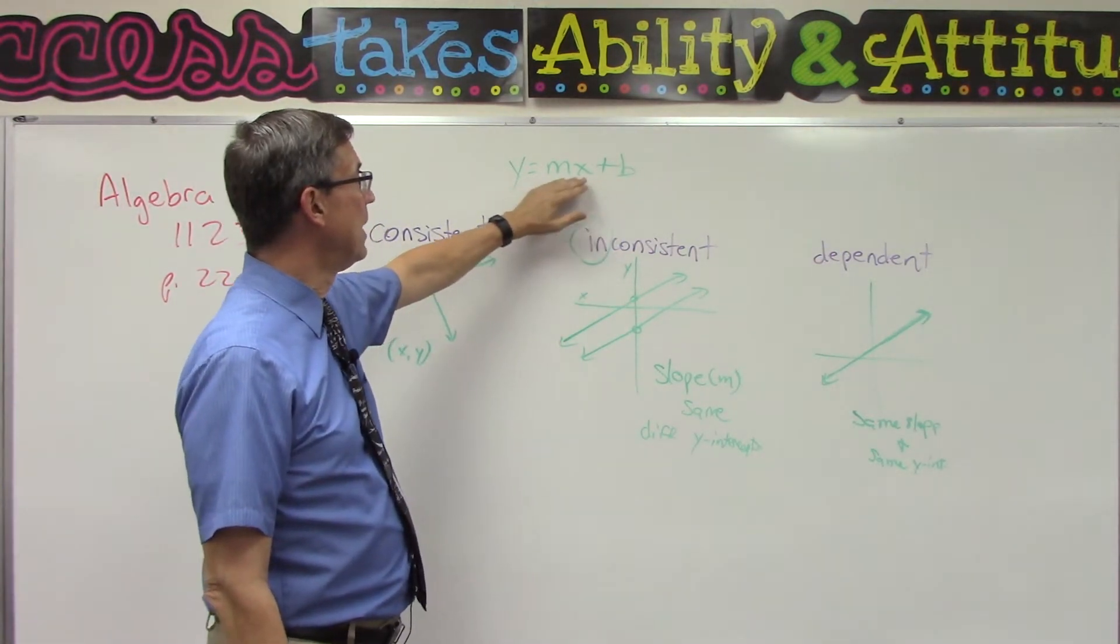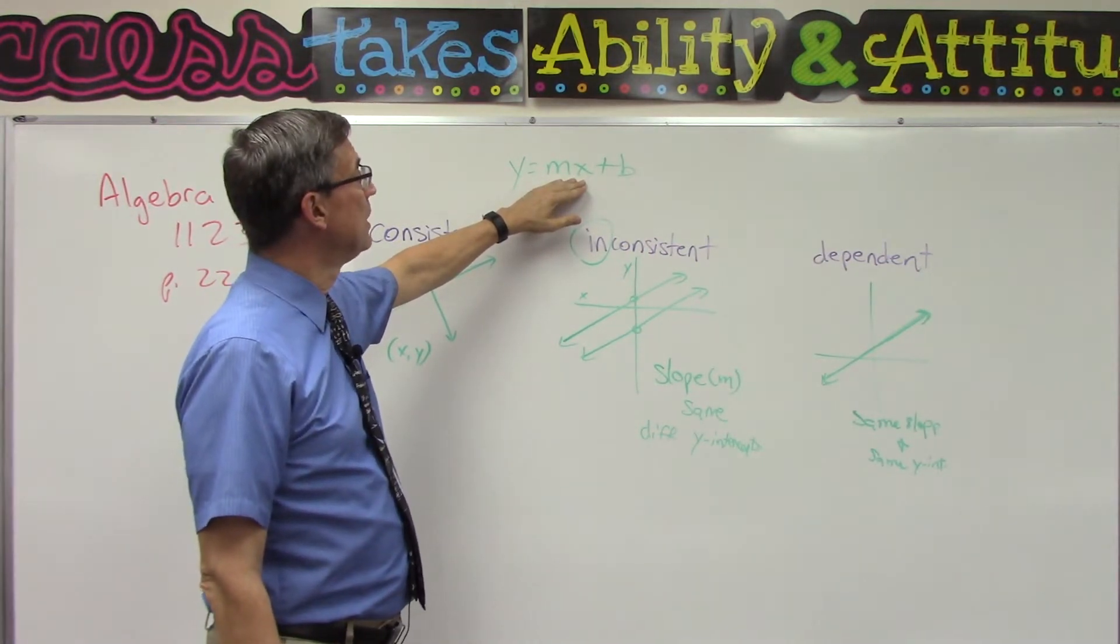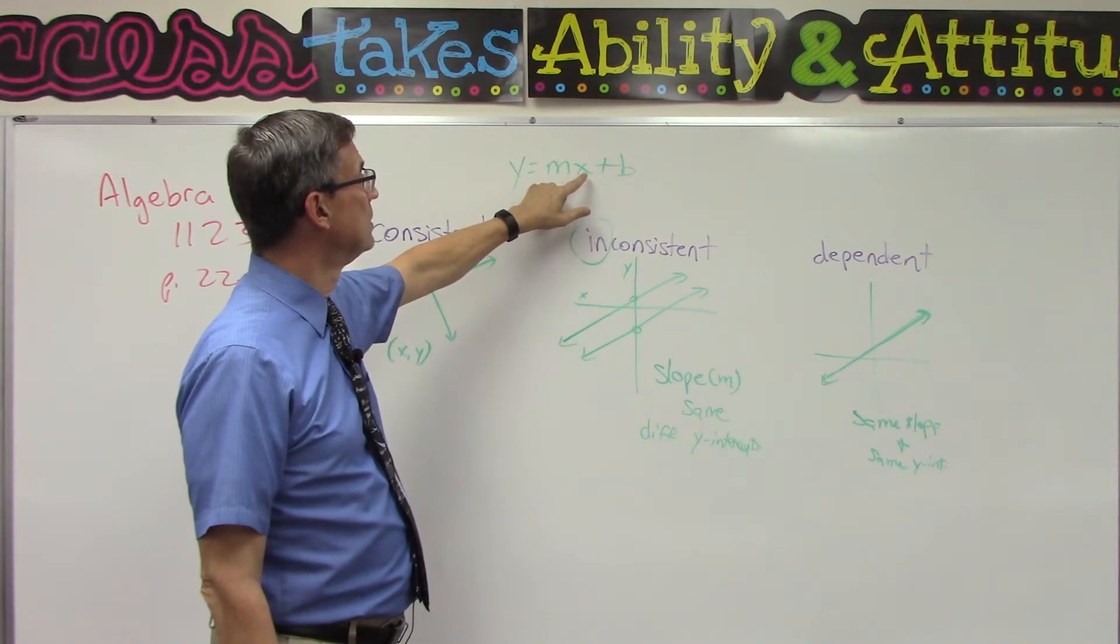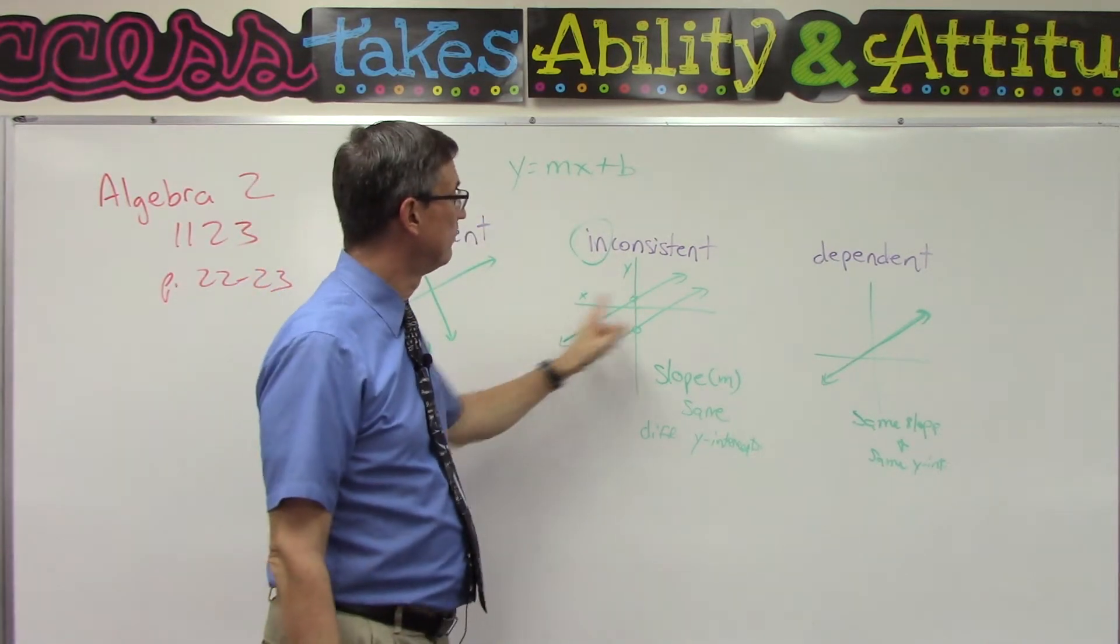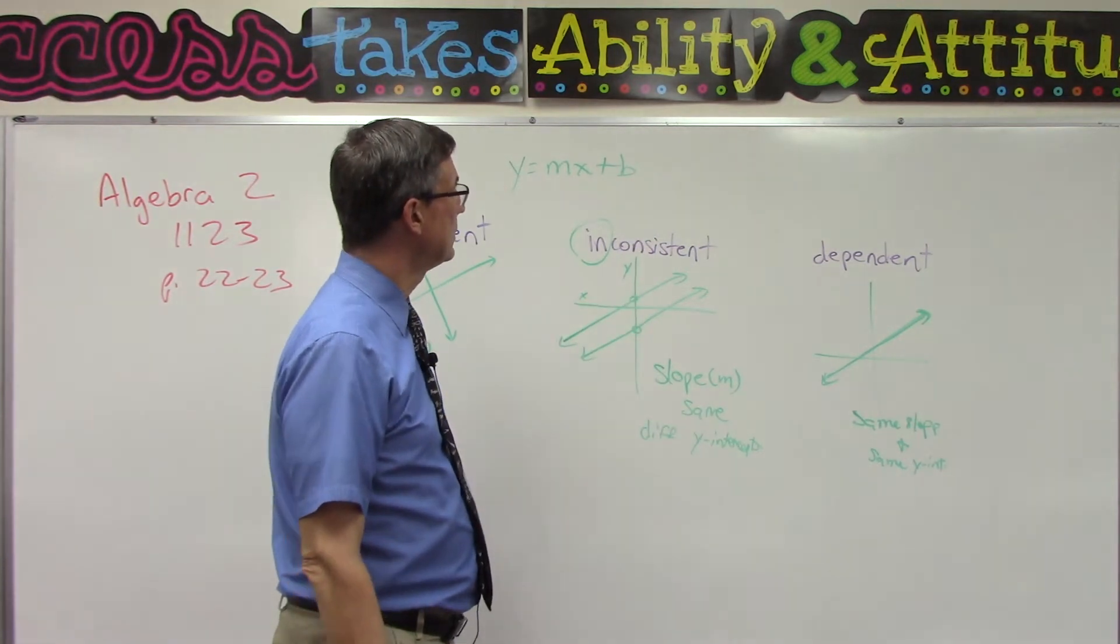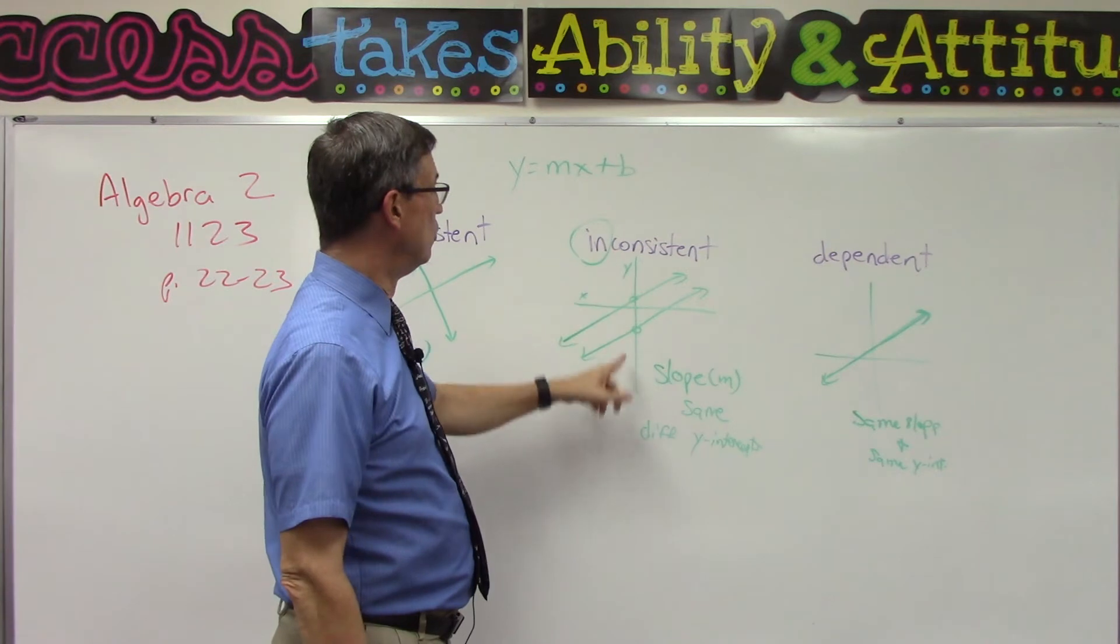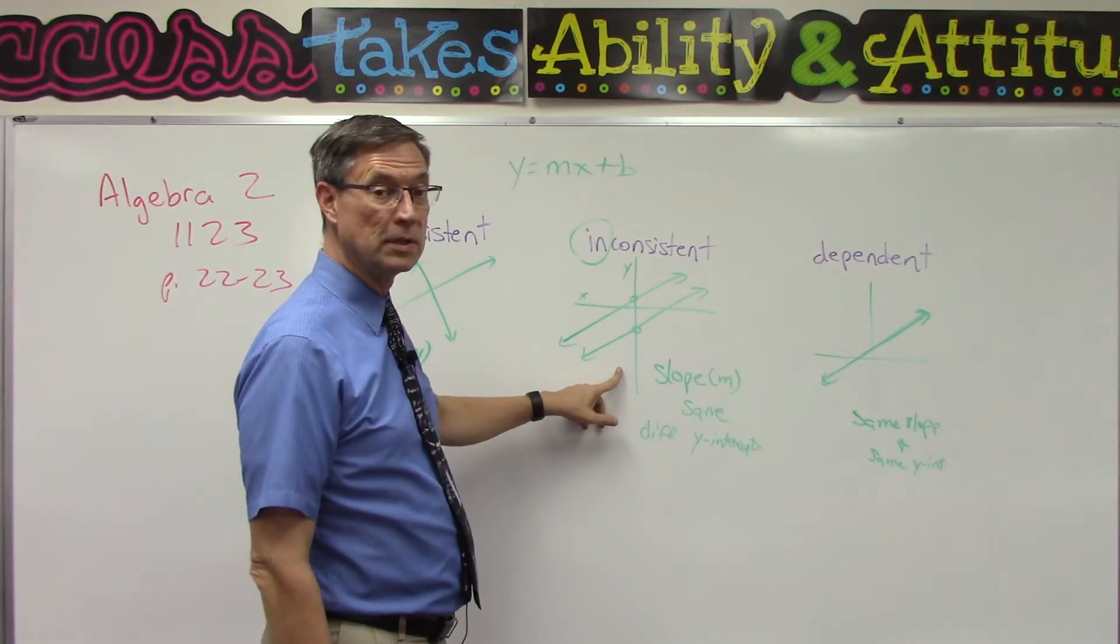Plug in zero for x and solve to see where it crosses on the y-axis. If you get two different values for y, then you know it's inconsistent - they have the same slope but different y-intercepts.